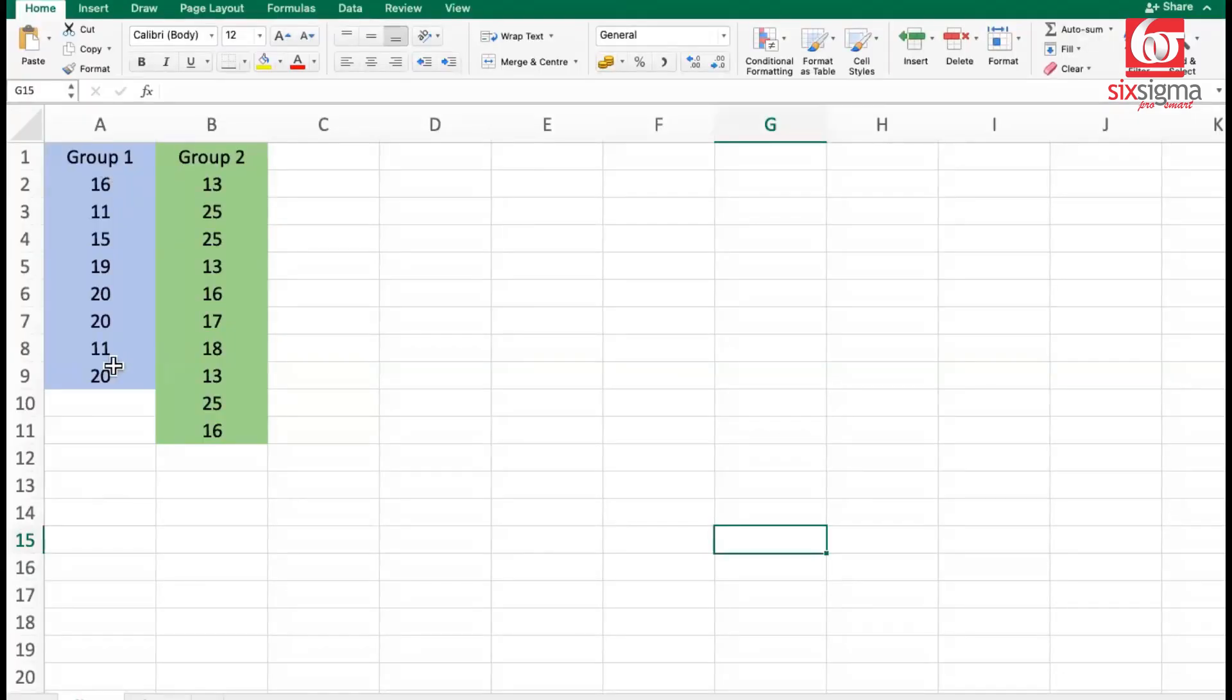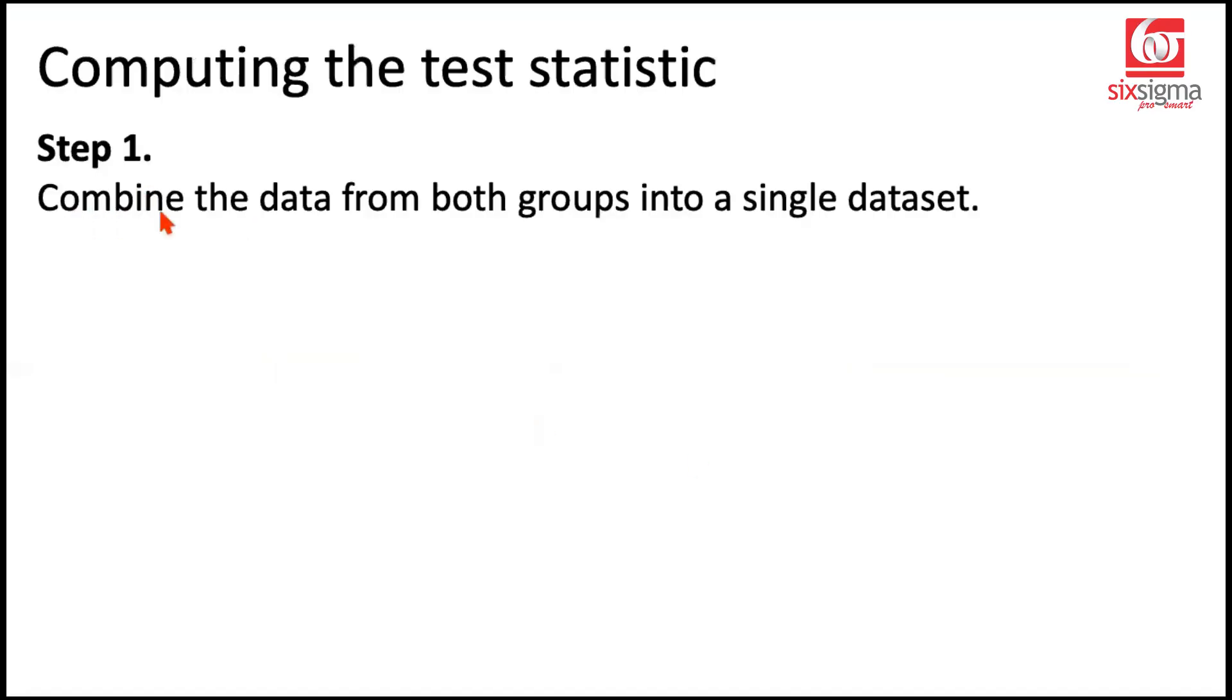I will quickly explain step by step how to calculate these. Let's first have a look at the data. We have two samples: the first sample from Process A and the second from Process B. This is our raw data. We are checking if the median of the population from where this sample was collected is comparable to the median of the population from where the second sample was collected.